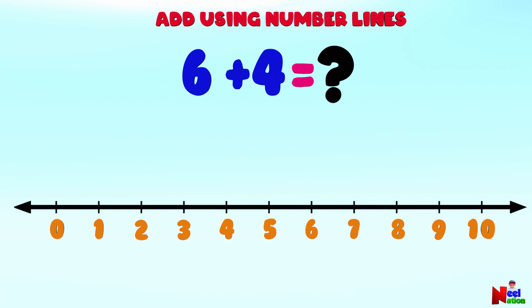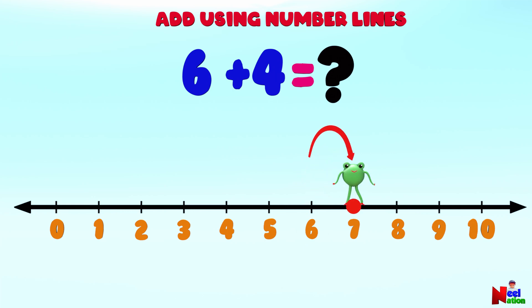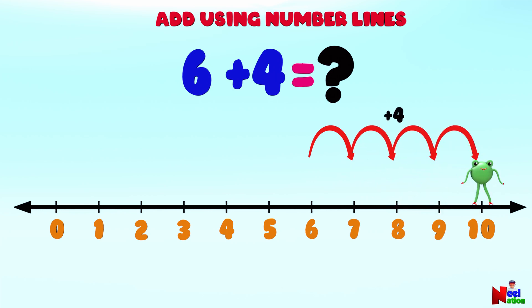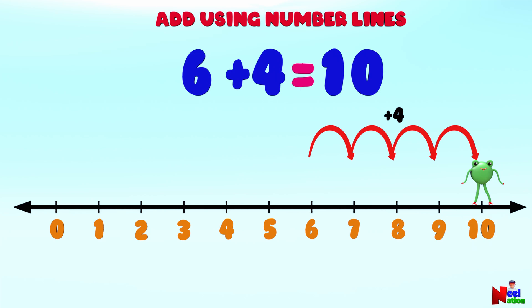Next, what is 6 plus 4? Can you locate number 6 on the number line? Here you go. Starting from number 6, Mr. Lutu will jump four points forward to the right. 1, 2, 3, 4. Where is Mr. Lutu? Number 10! So 6 plus 4 equals 10. Great job!